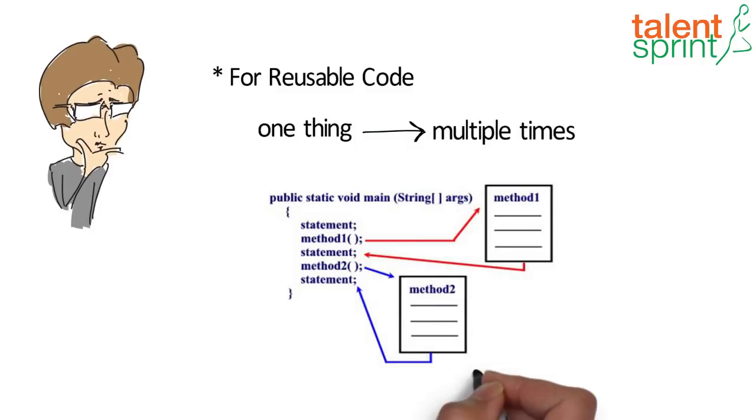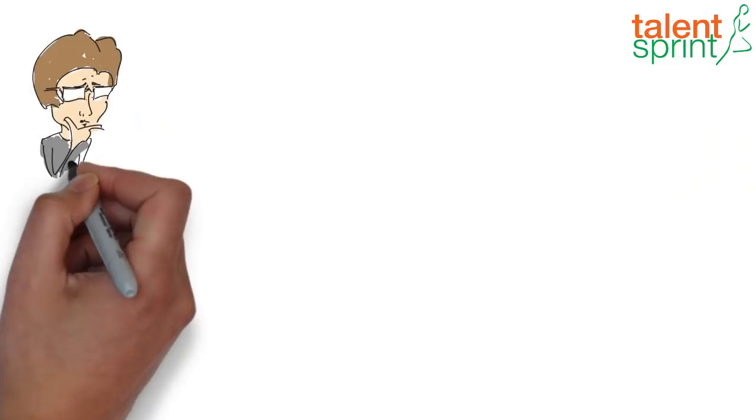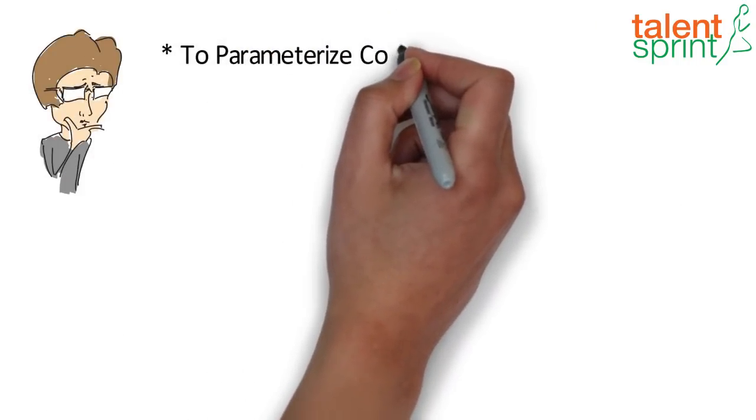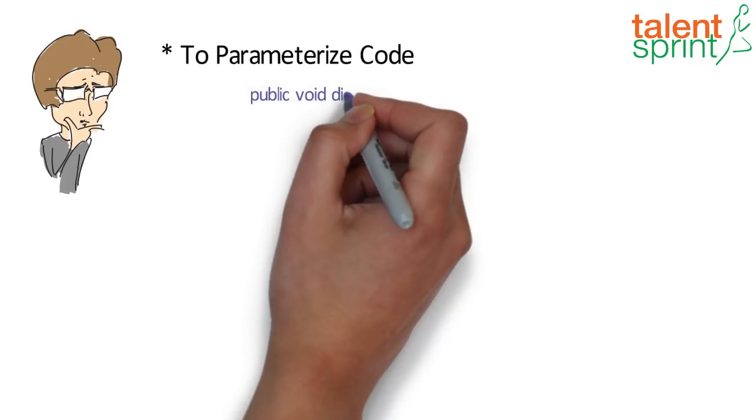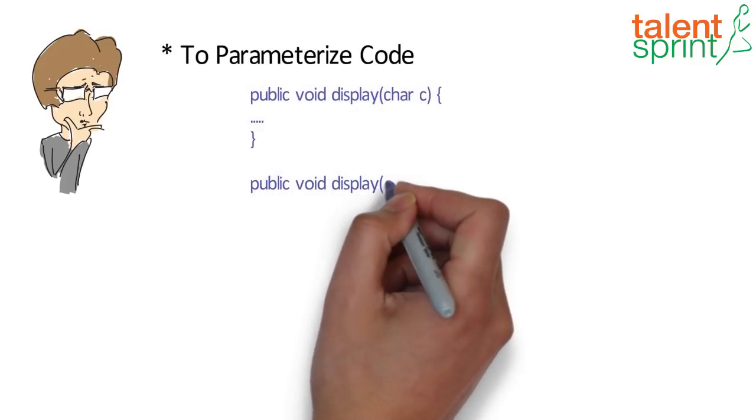The second reason is to parameterize the code. Add different parameter sets to the method to change the way the method works depending on the number of parameters provided.